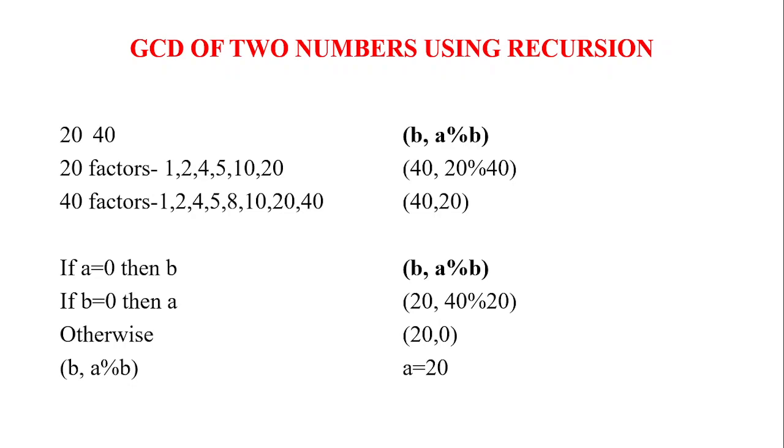Let us see an example now 20 and 40. The factors of 20 I have listed. The factors of 40 also I have listed. So what I am doing is I am finding A modulus B. So I get the answer as 20. So it means that 20 is a common factor. Let us see the recursive procedure.